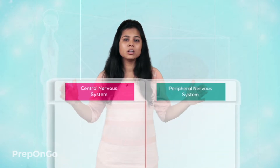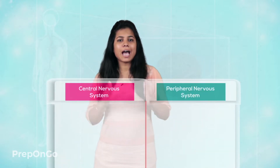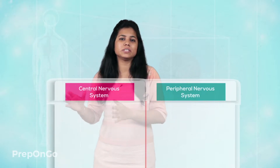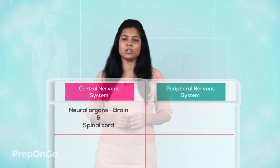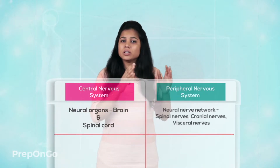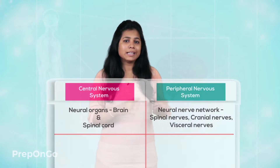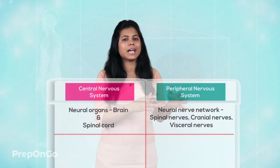Let's understand the difference between these two systems by drawing a table. The central nervous system includes organs such as the brain and the spinal cord. Whereas the peripheral nervous system includes the nerves which are outside the brain and the spinal cord — that is, the spinal nerves, visceral nerves, and the cranial nerves.